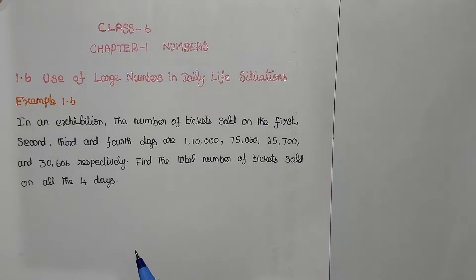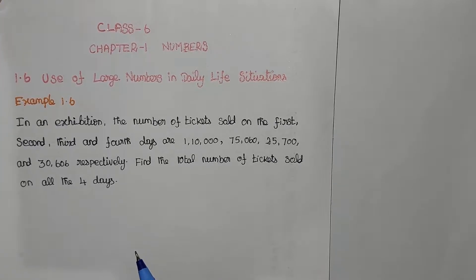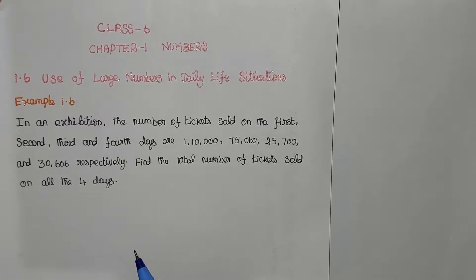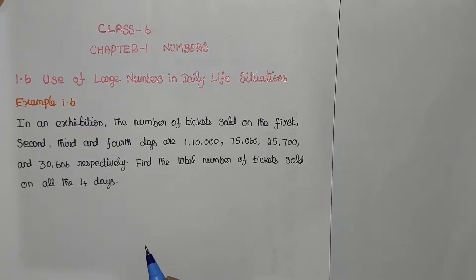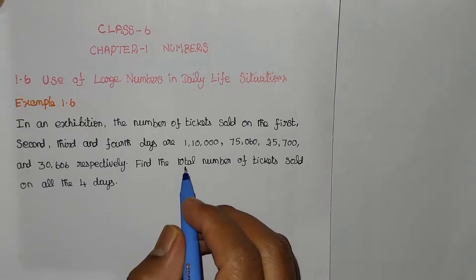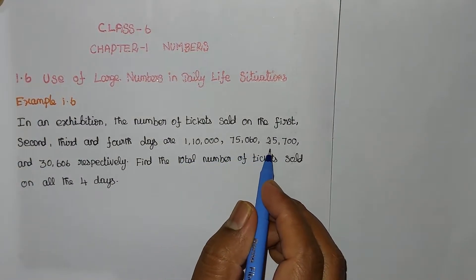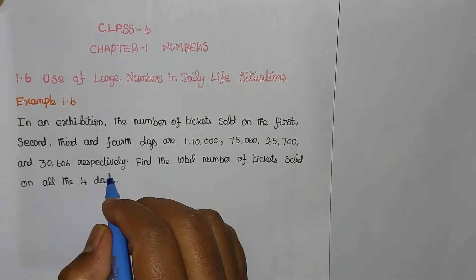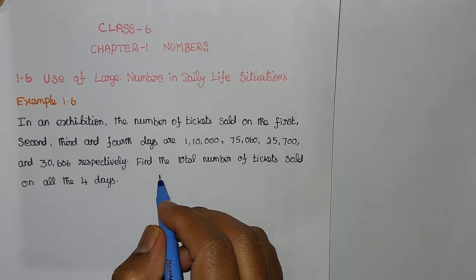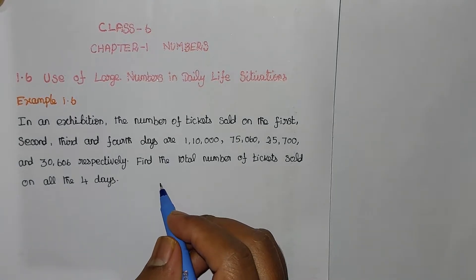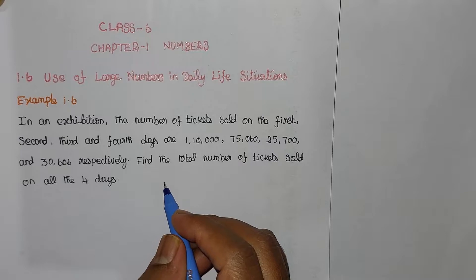Now Example 1.6. In an exhibition, the number of tickets sold on the 1st, 2nd, 3rd, and 4th days are given. Find the total number of tickets sold on all the 4 days.